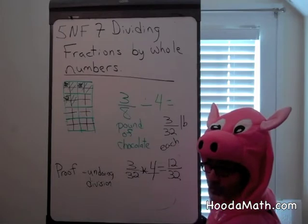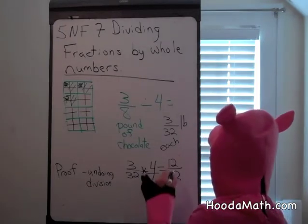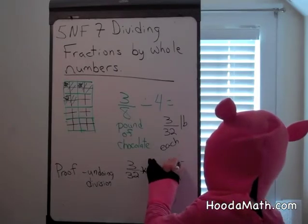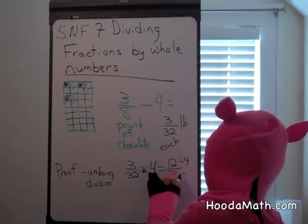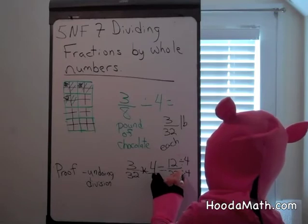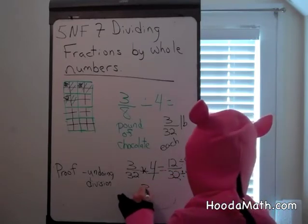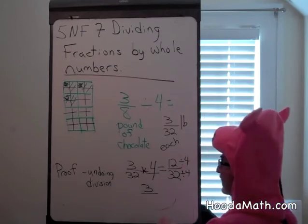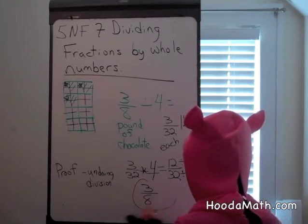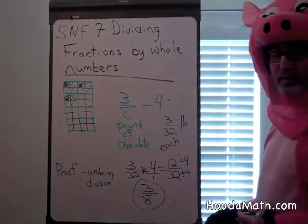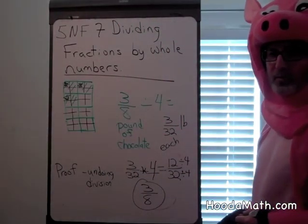You can reduce the fraction by dividing the numerator and the denominator by the same common factor, four. Twelve divided by four is three. Thirty-two divided by four is eight. And you proved that by getting the original amount of chocolate that you divided among four friends.